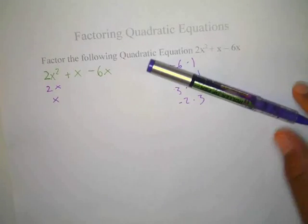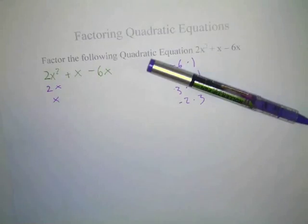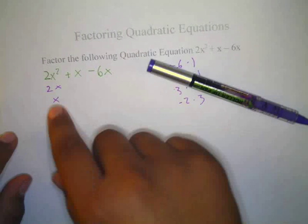All right, our equation is 2x² + x - 6x. So what we have to do is find out what times what makes 2x². So 2x times x makes 2x², so we'll write it right here.